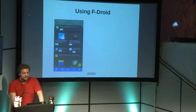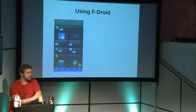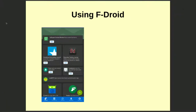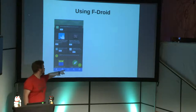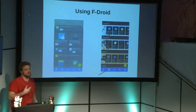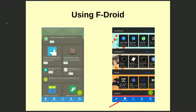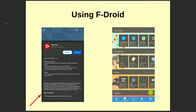Once you have F-Droid installed, it looks like this when you start it for the first time. You see the latest changes to the repository — the newest apps or updates to existing apps — displayed in a tile stream. You also have a search function to look for apps, and a category section where you can browse by topics like games, development, office, and so on.